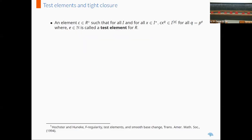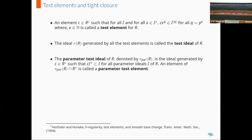Now we have the notion of test elements. As the name suggests, a test element helps us detect whether an element belongs to the tight closure or not. An element C in R-zero is said to be a test element for R if, for all ideals I and for all X in I-star, C times X to the Q belongs to I square bracket Q for all values of Q. The ideal generated by all the test elements is called the test ideal of R.